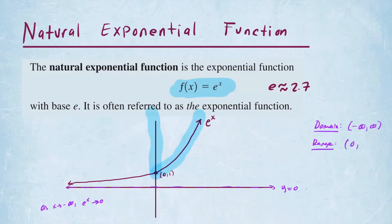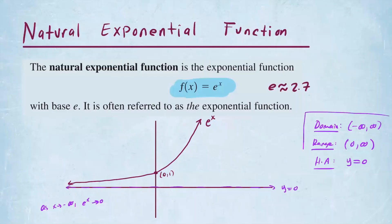The function keeps on growing exponentially, so the range is 0 to infinity. There is a horizontal asymptote — HA — at y equals 0. Make sure to write y equals 0, not just 0, because you have to make it clear whether it's vertical or horizontal. This is a horizontal asymptote, so we write y equals 0. These are three key pieces of information we know about this natural exponential function.